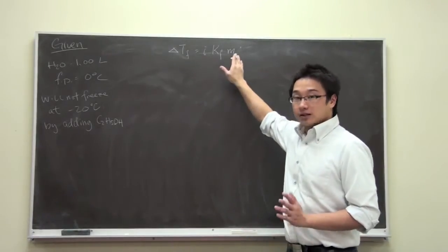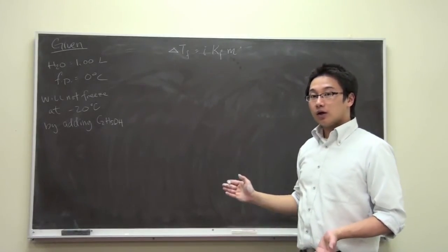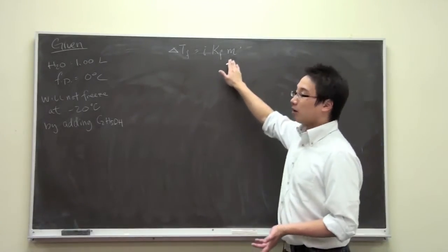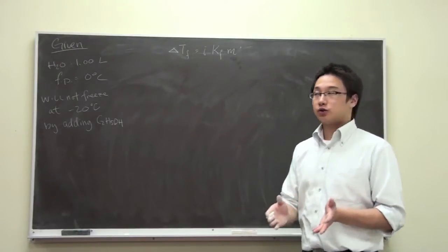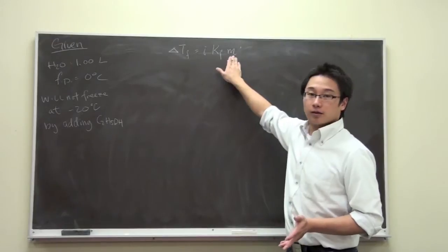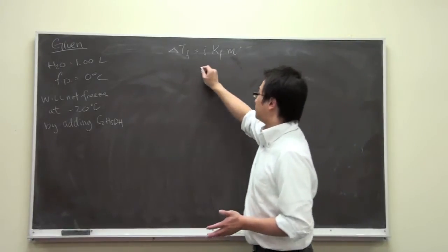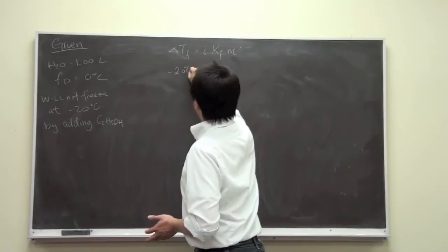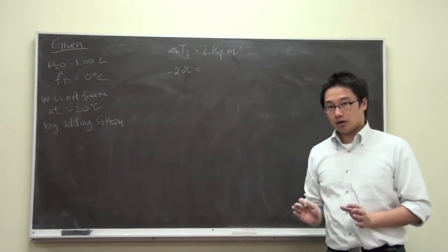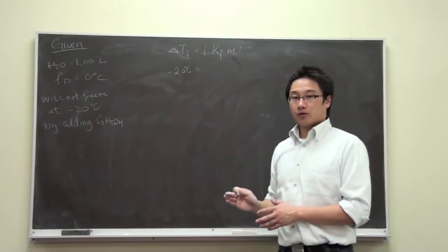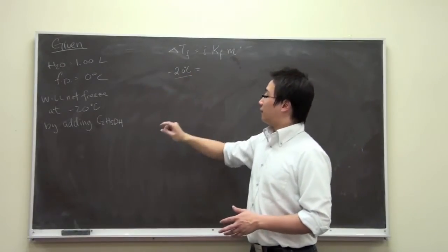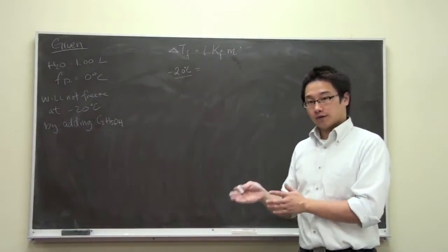This small letter m is not mass, it is molality. So make sure you keep that in mind this is molality. Yes they are the same small letter m but it is your knowledge to differentiate that this is not the mass but the molality. So since the change of the freezing point is negative 20 degrees Celsius, this is not the temperature, it is the change of the temperature.